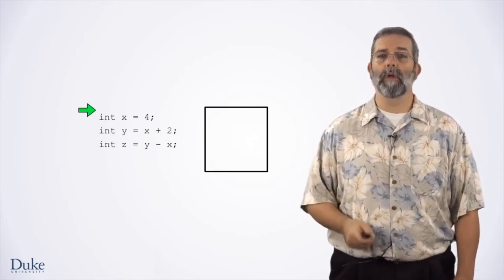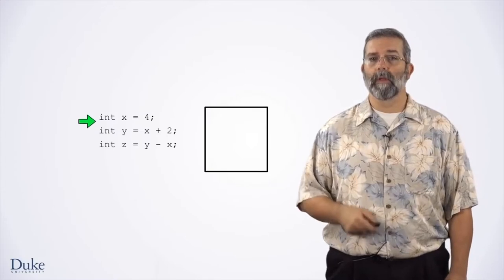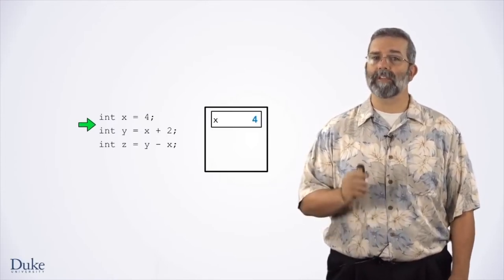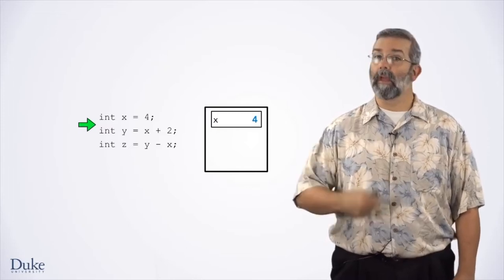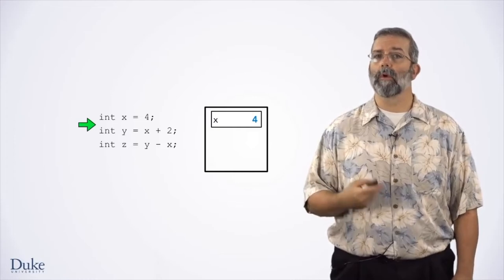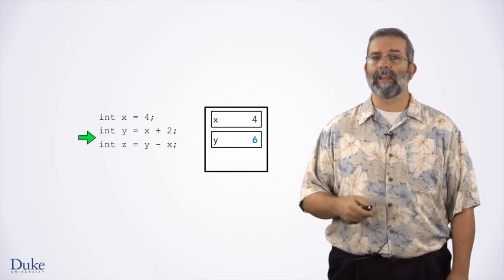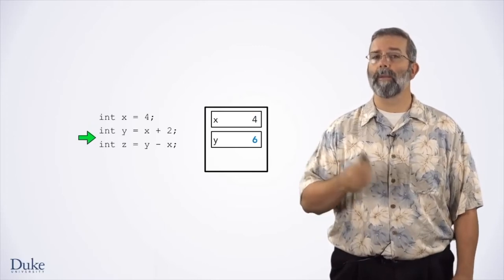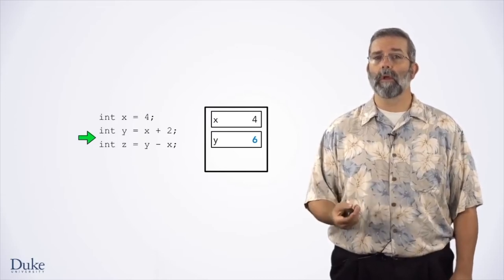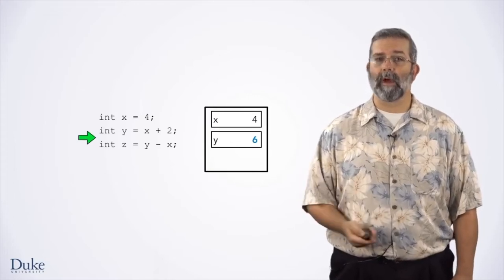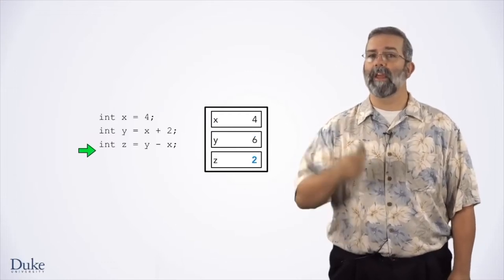Variables are only useful if you make use of the value that they have. The first code declares x and initializes it to 4. Next, y is declared and initialized to x plus 2. To perform this statement, we must evaluate the expression on the right-hand side of the equal sign. x is 4, so x plus 2 is 4 plus 2, or 6 — we create a box for y and put 6 into it. The last statement creates a variable z and initializes it to y minus x: y is 6, x is 4, subtract to get 2 — create a box for z and initialize it to 2. Now you know how to execute code with variable declarations and assignment statements.